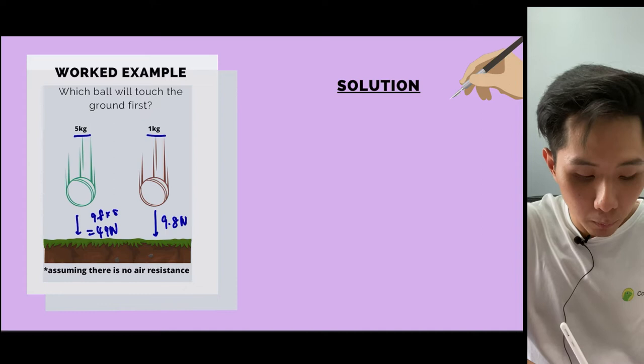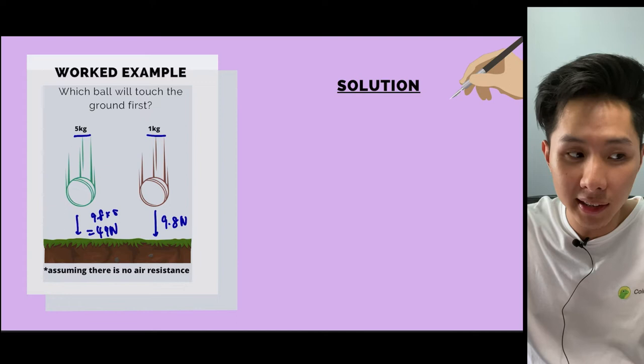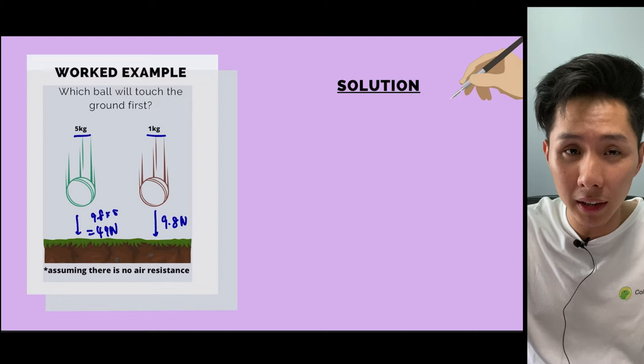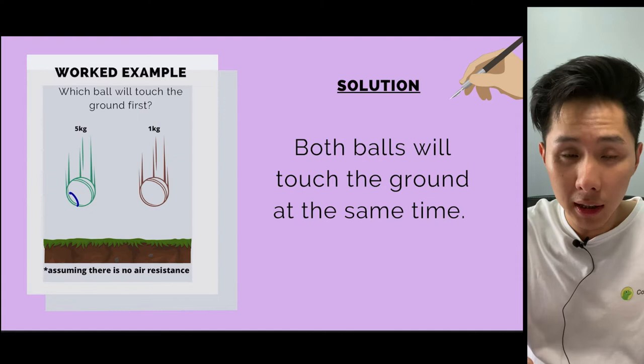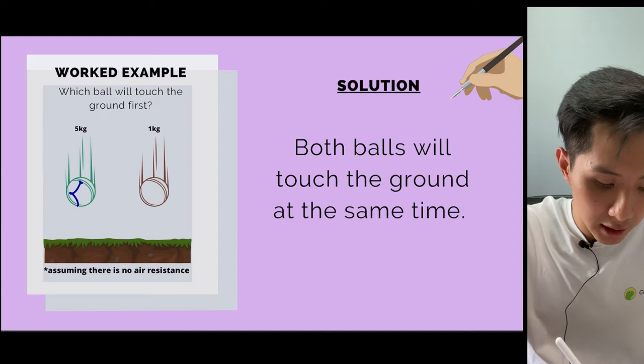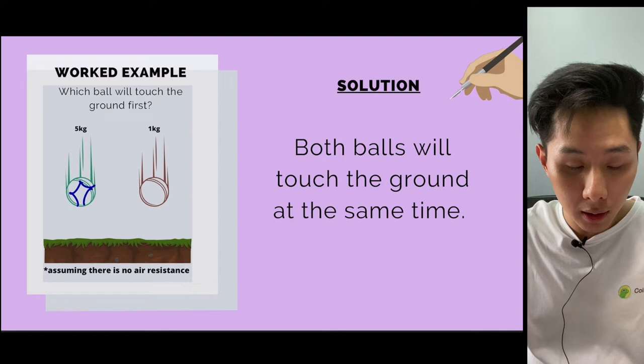The question is: which ball will touch the ground first? Intuitively you might think the 5 kg ball because there's more force. But that's not the case, as Newton's second law will explain. Both balls touch the ground at the same time, because gravity pulls each kilogram equally. Regardless of the weight of the ball, both will touch the ground simultaneously.